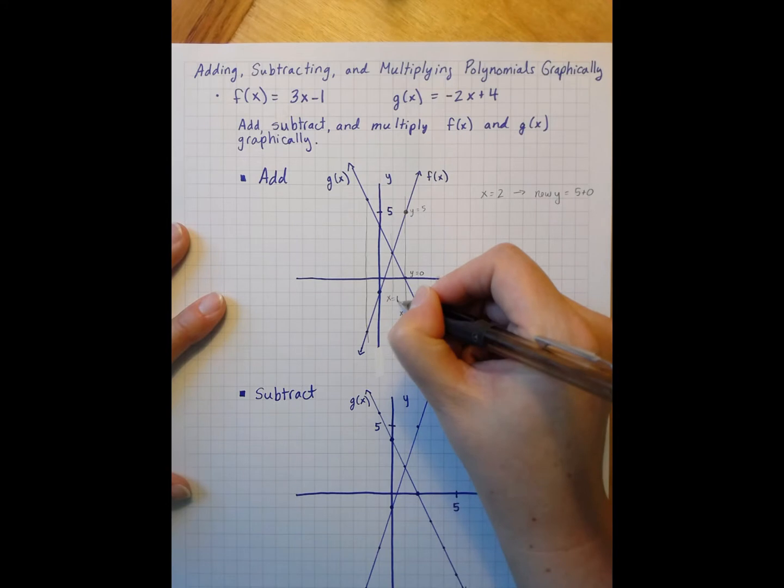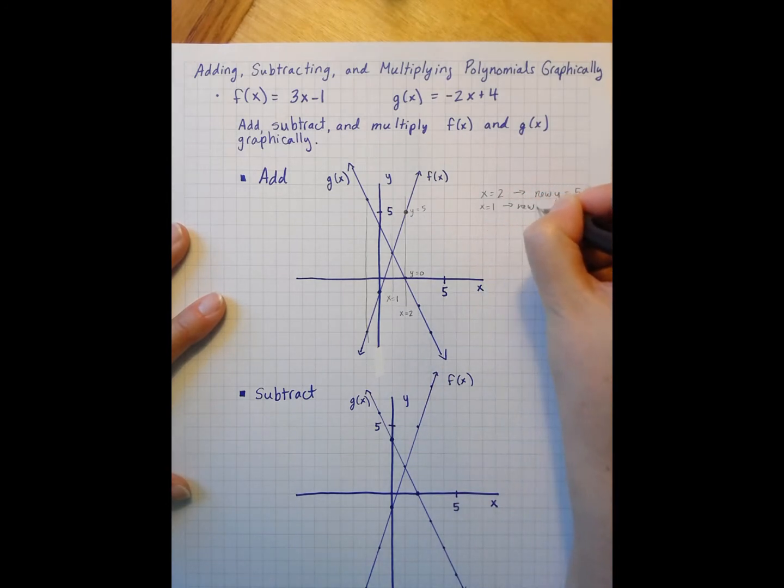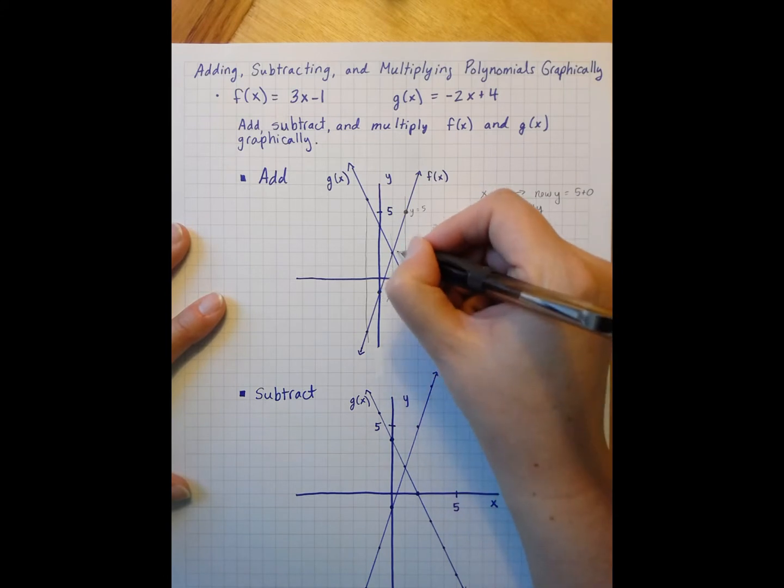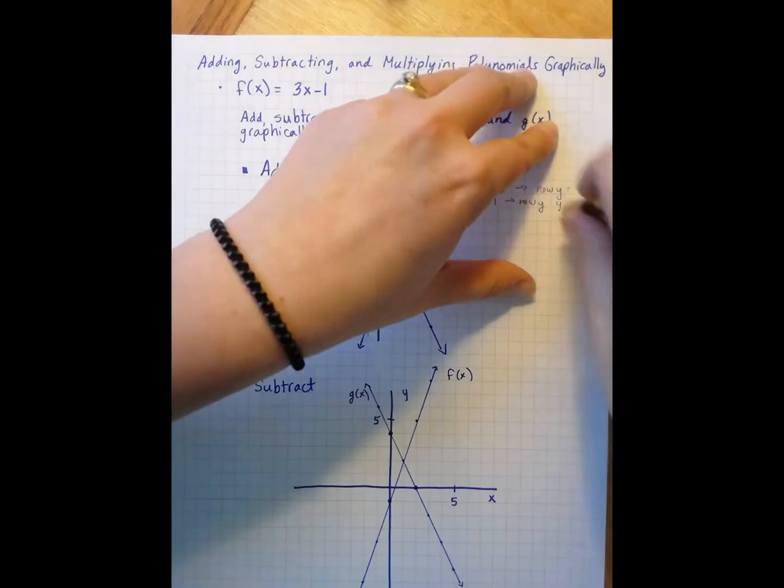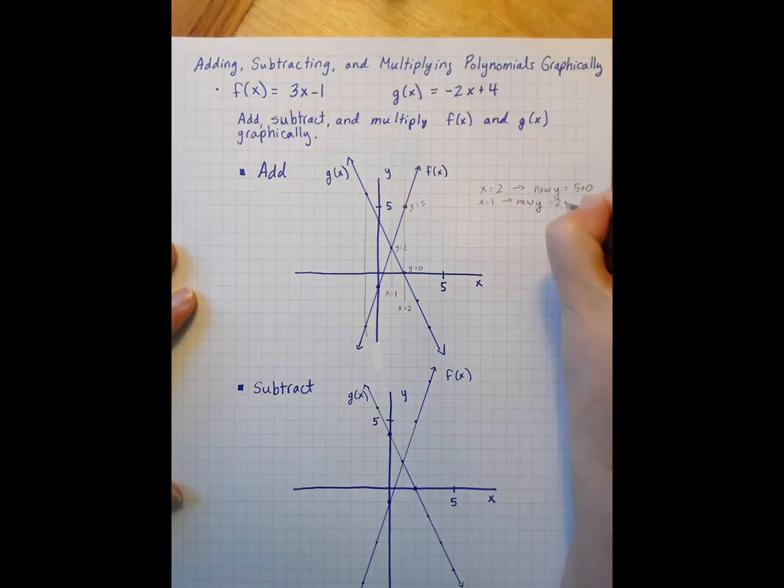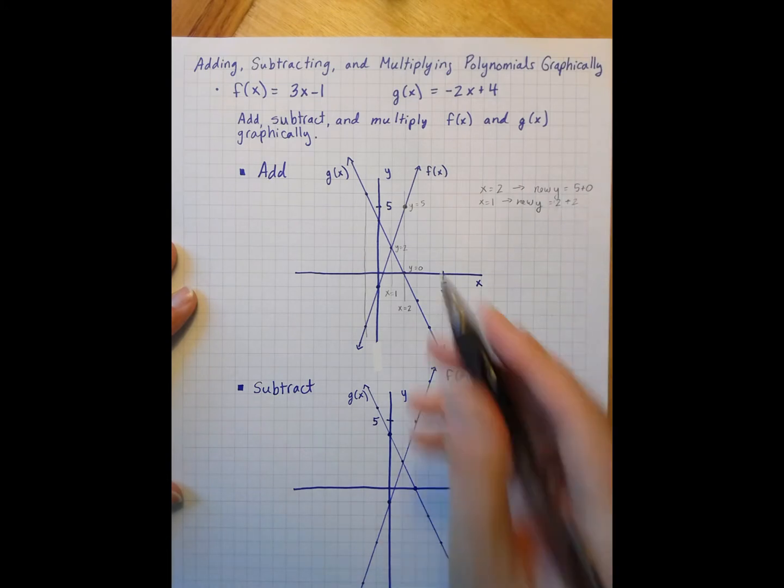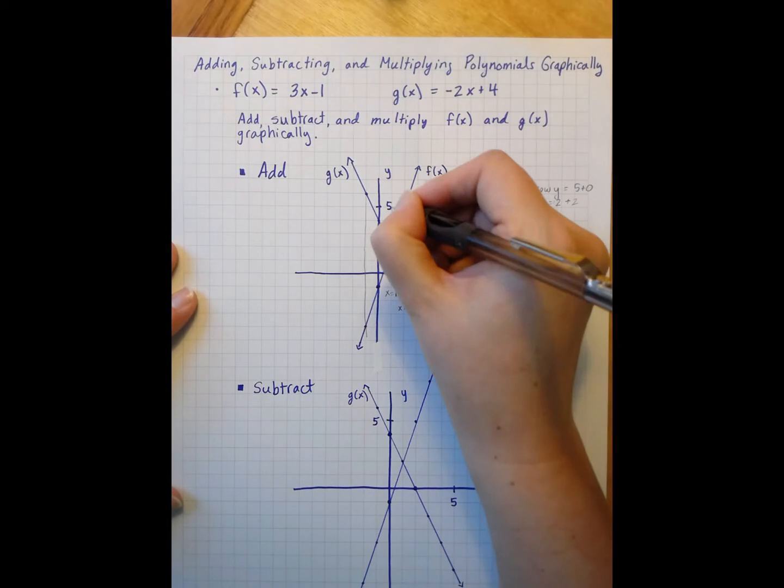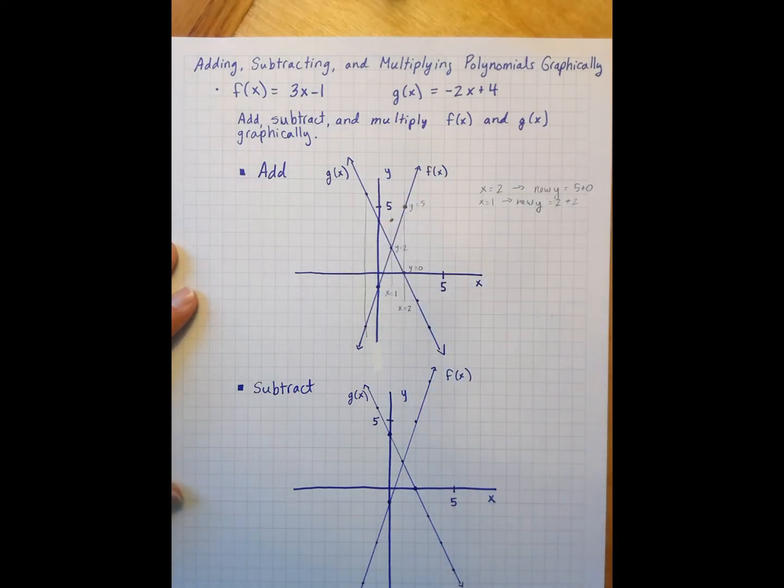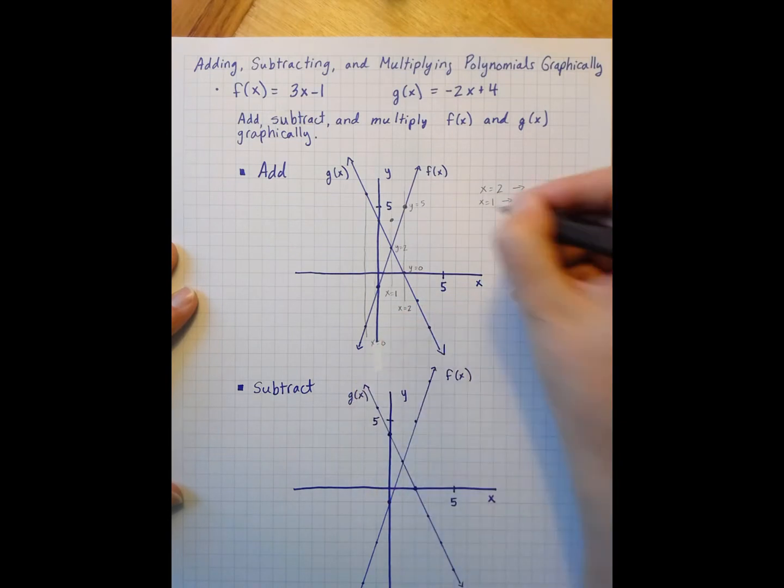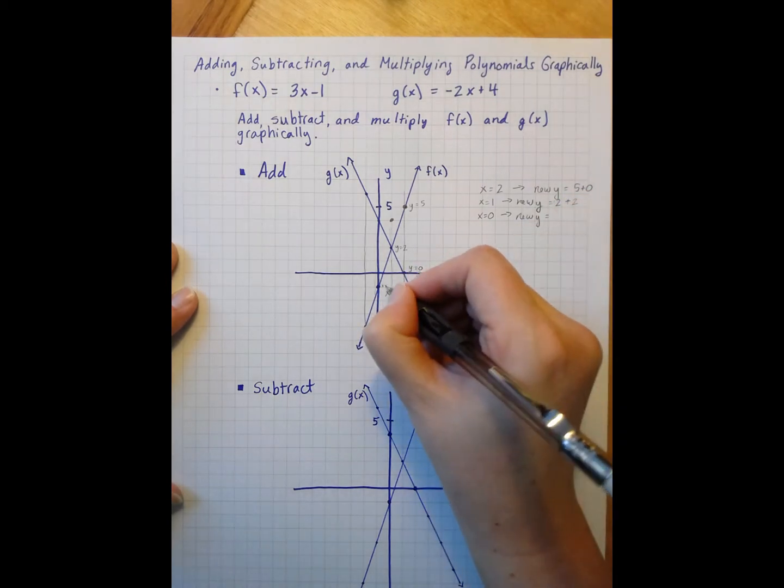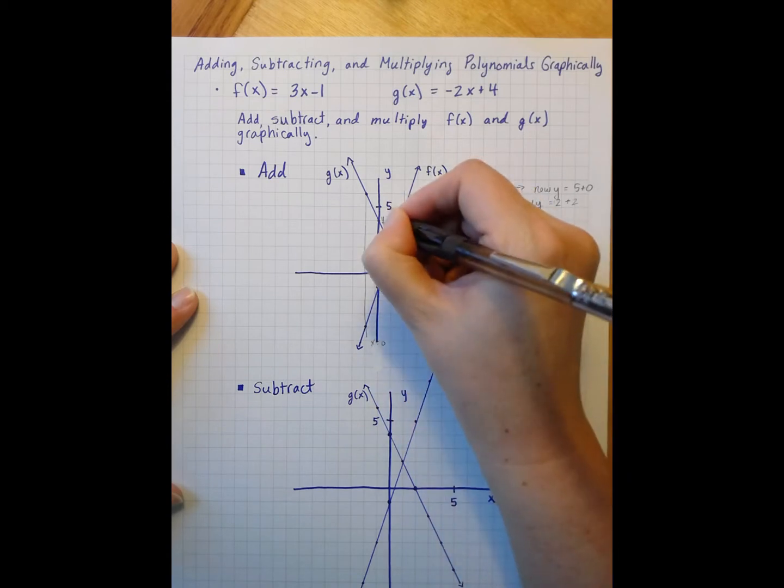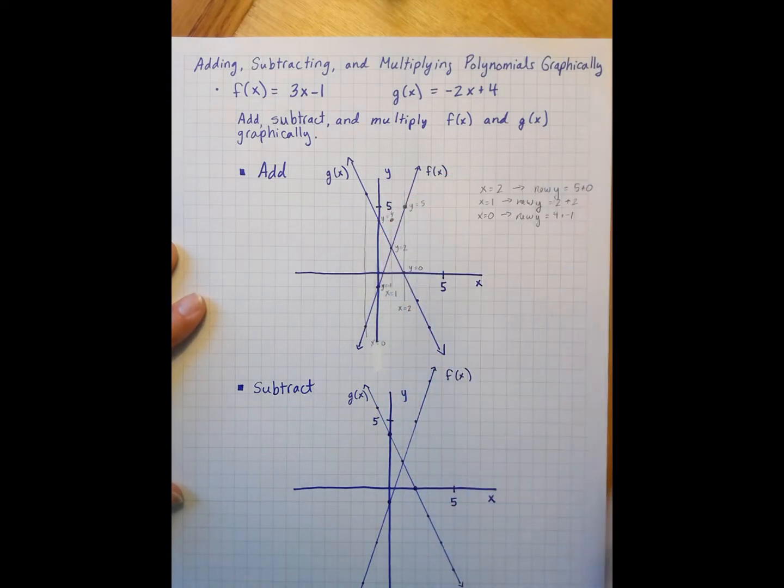When I look at x equals 1, my new y has a value of 2 plus 2. They're both at 2, right here. And so that equals 4. So my new y will be 4. If I look here when x is 0, my new y equals negative 1 and y equals 4. So I have 4 plus negative 1, which is positive 3.